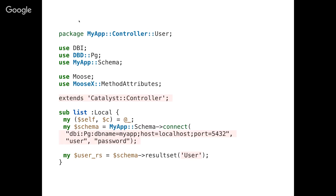Here's an example of what a controller could look like. This is a controller that has an action called list that's getting a result set of users and is going to do something with it. What's wrong with it? Well, I don't like how it builds a schema every time the list action is called. Basically what's going on is that just in order for this action to do its job, it's creating the schema instance, and it's all hard-coded. Everywhere you needed the schema, you'd end up doing the same thing over and over again. If you changed the database, you'd have to search and replace everywhere.